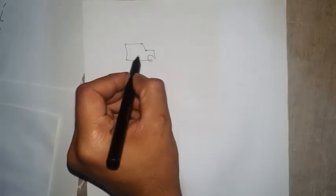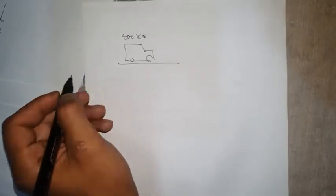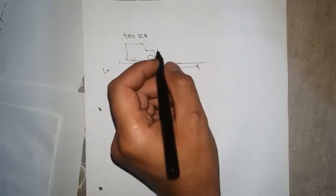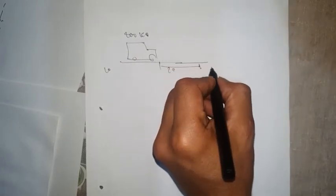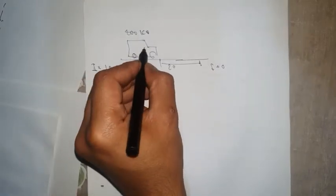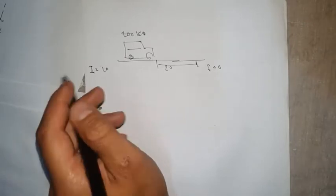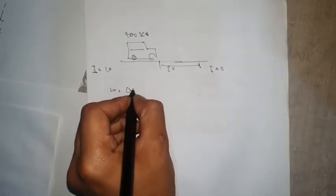Now we're going to talk about average frictional force. Suppose we have a car with a mass of 400 kg moving in one direction. The initial speed is 10 m/s, and after traveling 20 units of distance it comes to rest. The final speed is 0. There is only one force acting here — the frictional force. To find it, we'll use the work-energy theorem: all the work done equals the change in kinetic energy.